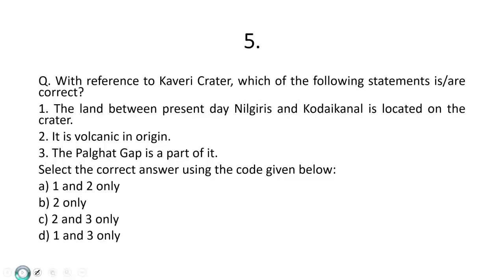Question No. 5. With reference to Kaveri Crater, which of the following statements is or are correct? No. 1. The land between present-day Nilgiris and Kodaikanal is located on the crater. Correct? It is volcanic in origin. No, it is not. The Palghat Gap is part of it. Correct? So 1 and 3. D is the correct answer.